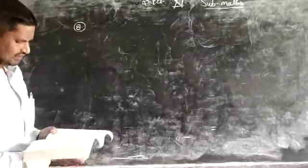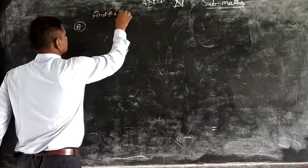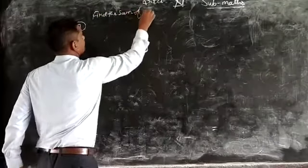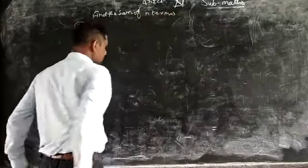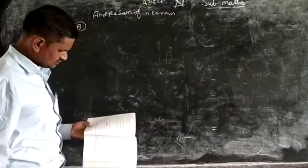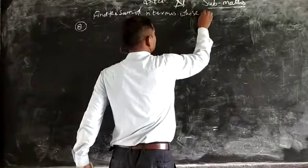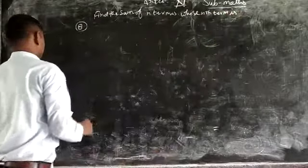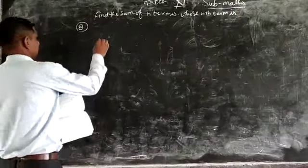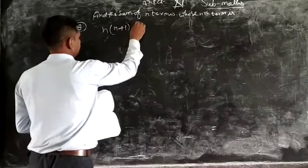Find the sum of n terms. Find the sum of n terms whose nth term is... Question number 8: n(n+1)(n+4).